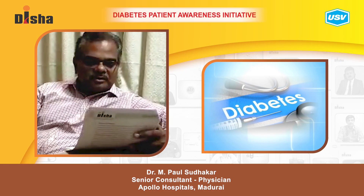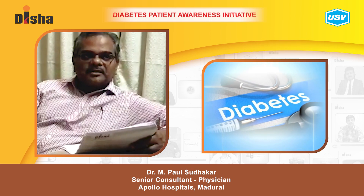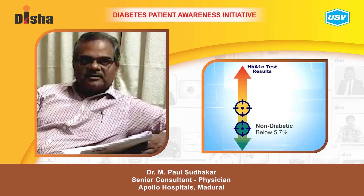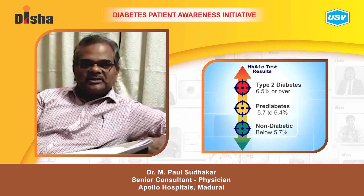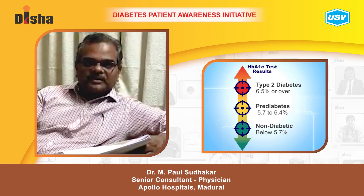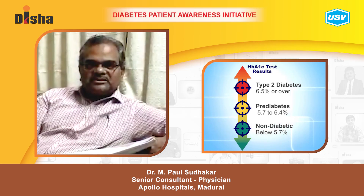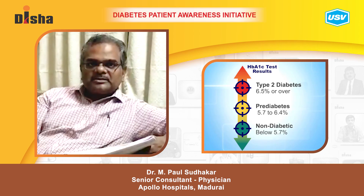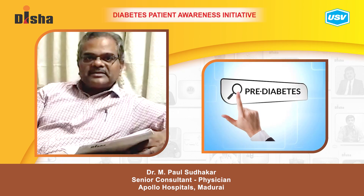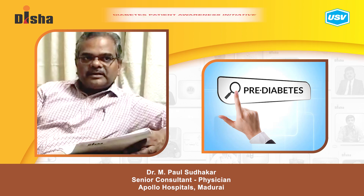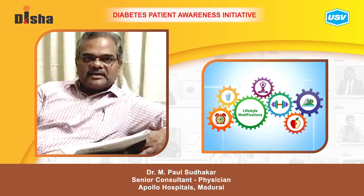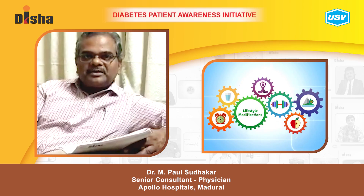Now I am going to talk about prevention of diabetes. There are three glycemic stages: normal, pre-diabetes, and diabetes. Normal is HbA1C below 5.7. Pre-diabetes is HbA1C between 5.7 and 6.4. HbA1C more than 6.4 means Type 2 diabetes. Prevention of diabetes should be carried out during the pre-diabetes period, through lifestyle changes — diet and exercise — to prevent the development of Type 2 diabetes.